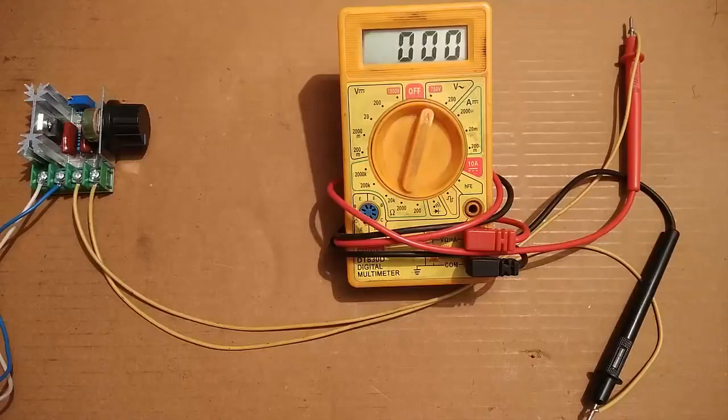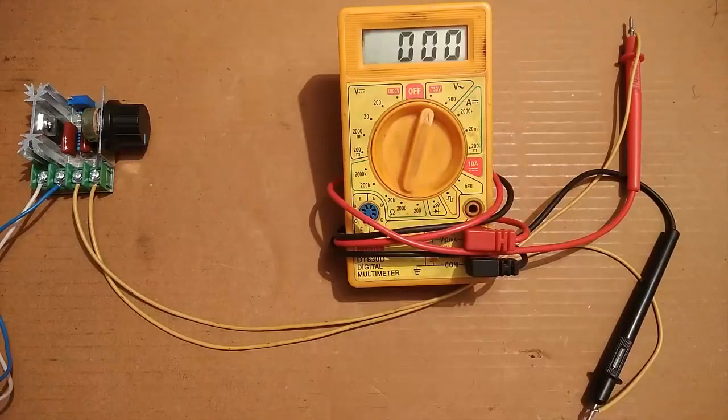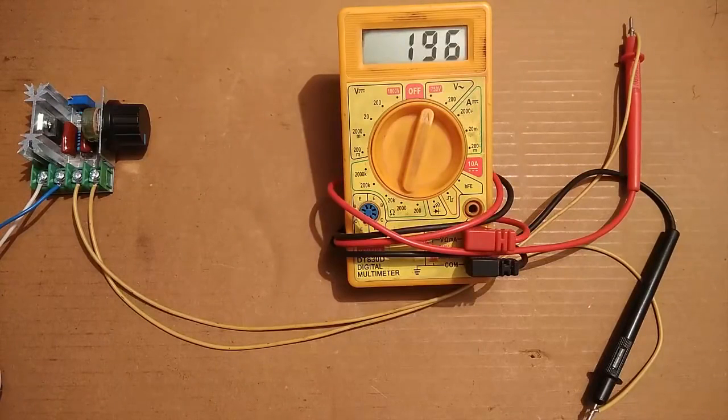I have connected the multimeter in the 750 volts AC setting, and I am going to power up the supply. As you can see, it is indicating 196 volts AC. Now I am going to carefully increase the voltage by rotating the knob.